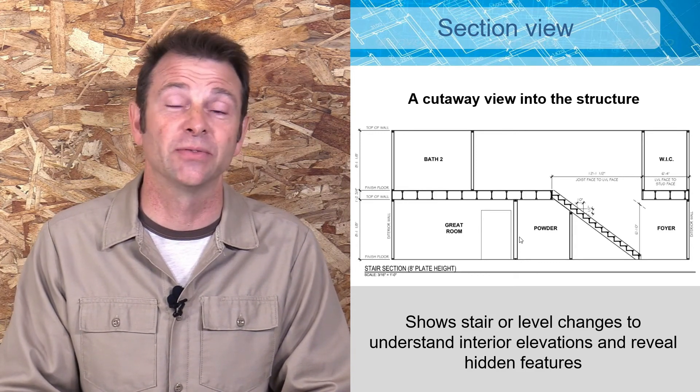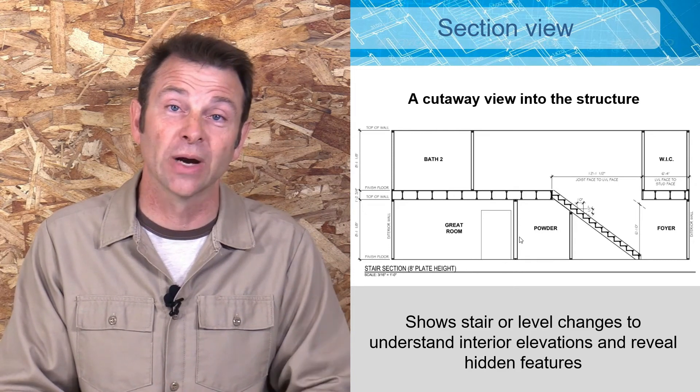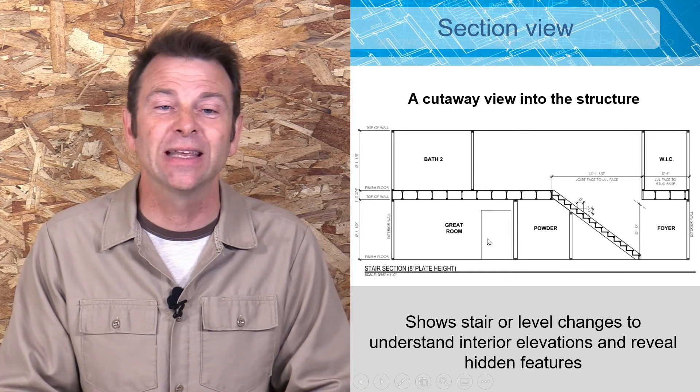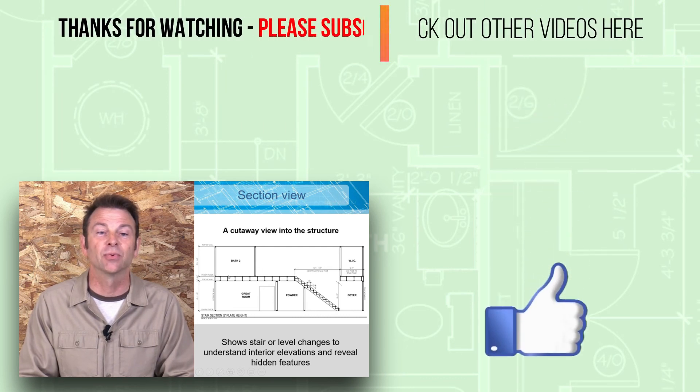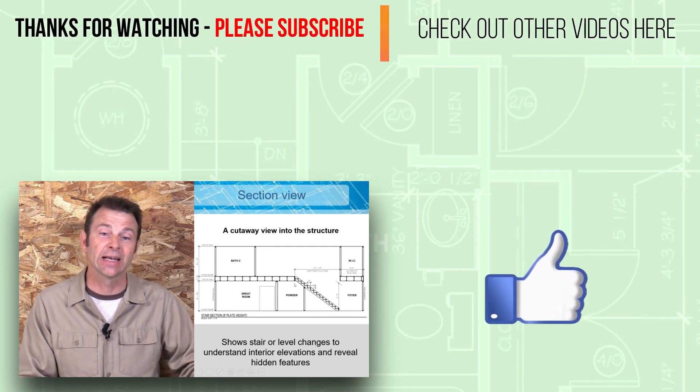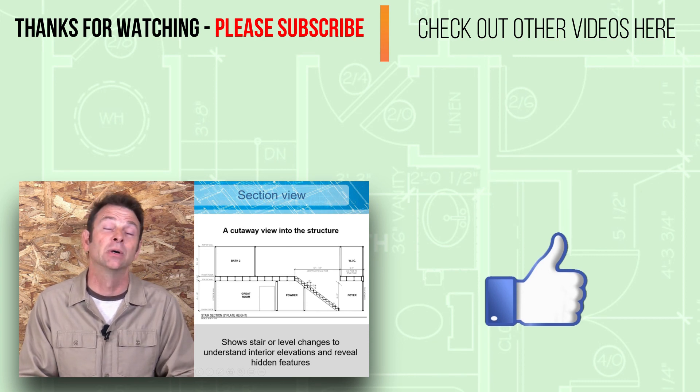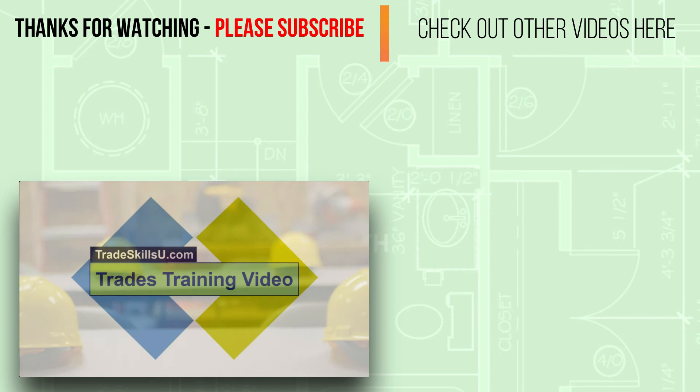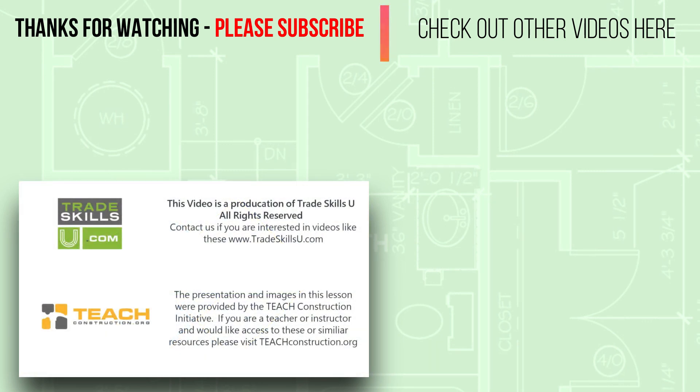Here we have a section view, and section views are very interesting because section views show you things that no other view can. This is as if we took a chainsaw and cut directly through a building in any specific location and it's going to reveal interior things. Here you're looking at walls that have been cut through, you're looking at a floor structure that has a cut through it, we're even seeing an interior staircase here. So section views are very special and very specific and offer us information that no other view can. This video is a production of Trade Skills, all rights reserved.